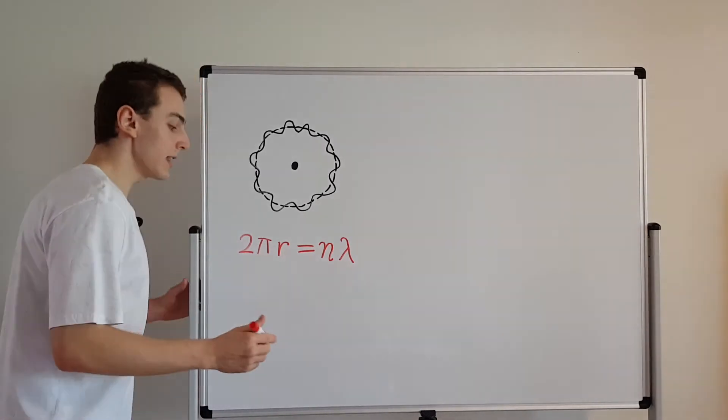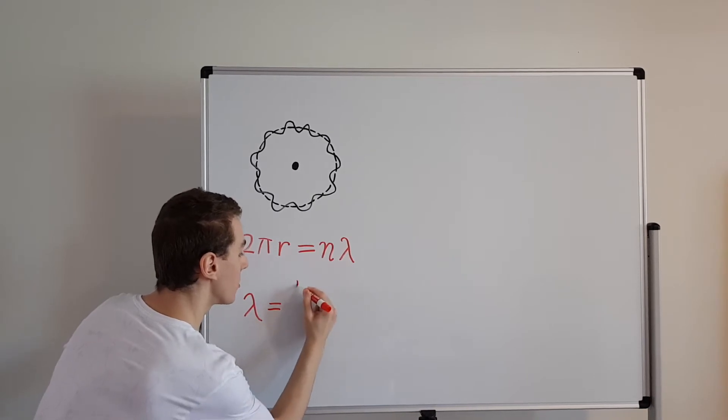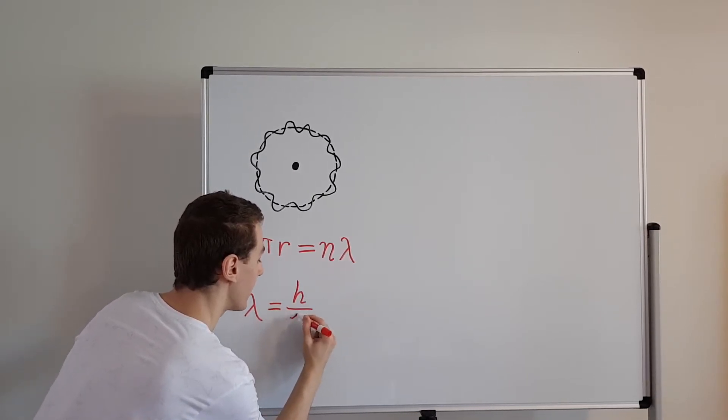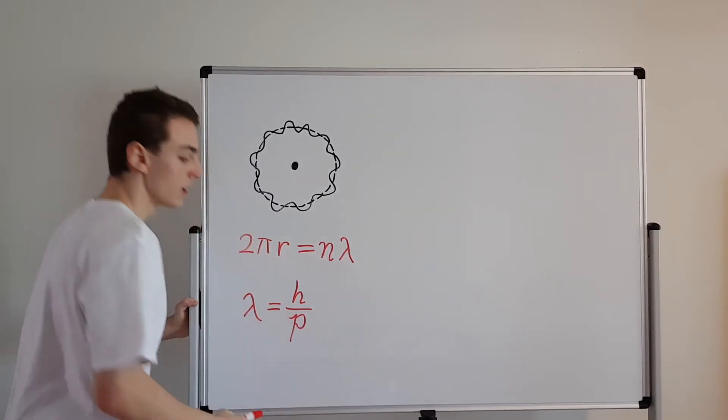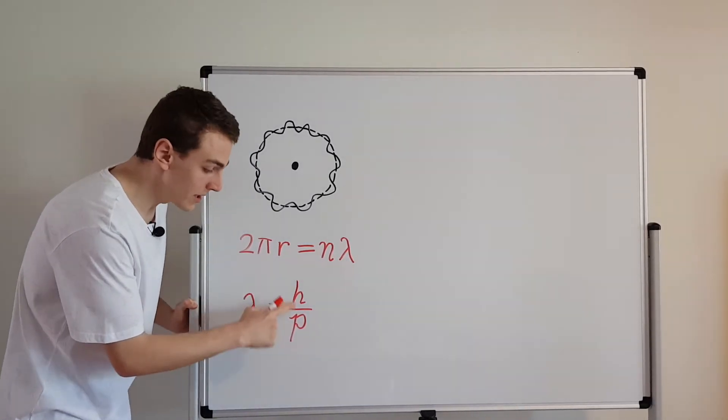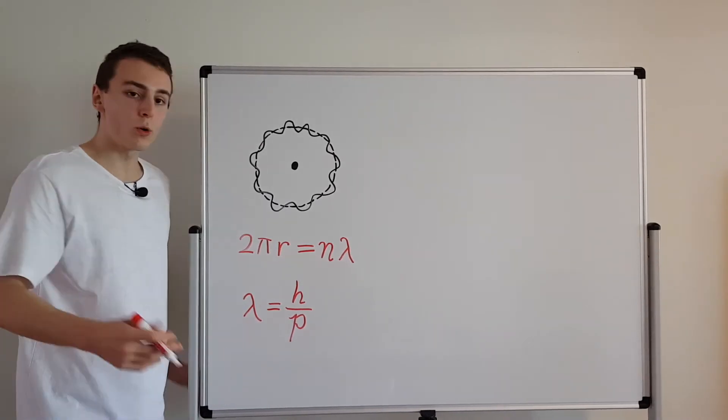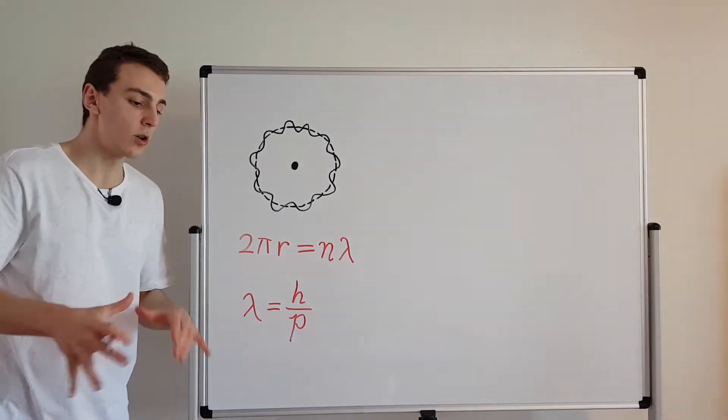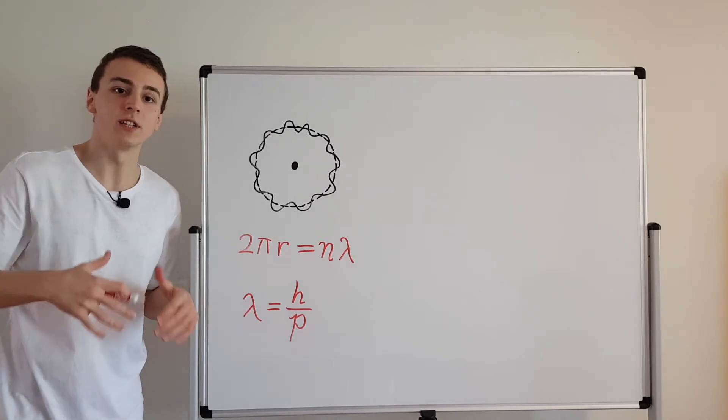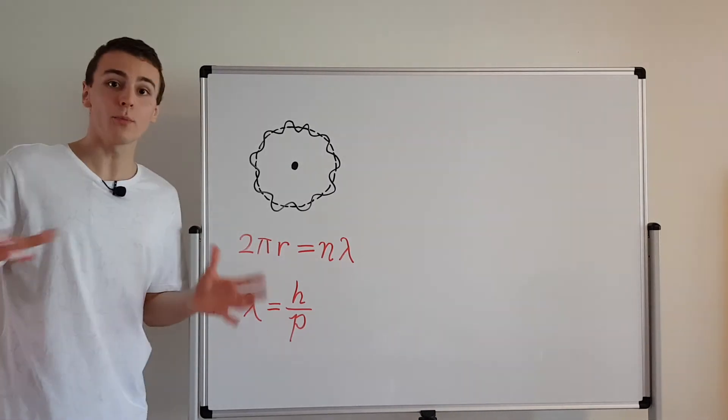So let's have a look at that. Lambda is going to be Planck's constant divided by the momentum. So Planck's constant, that's h, and p is the momentum. This over here, this is the de Broglie wavelength. So what de Broglie did was he took the idea of wave particle duality that was emerging for the description of light and he applied that to other particles as well.